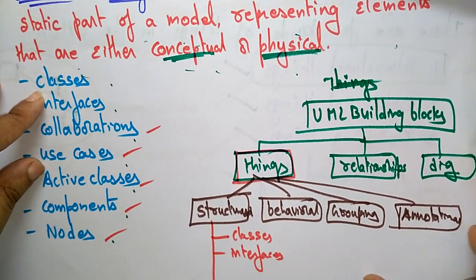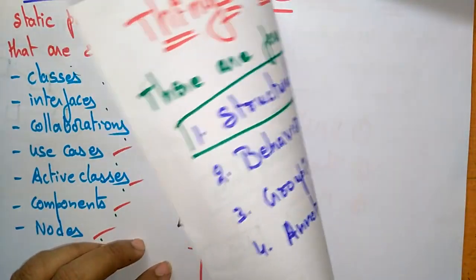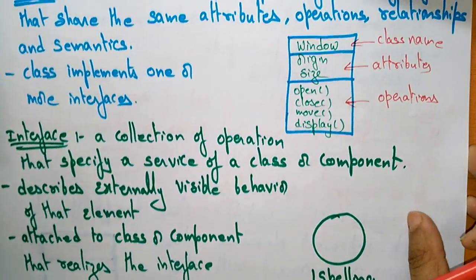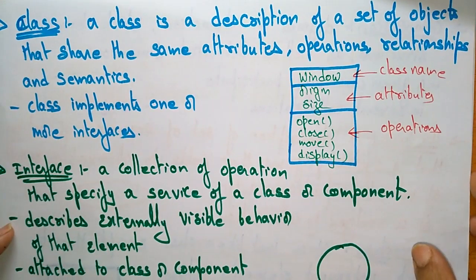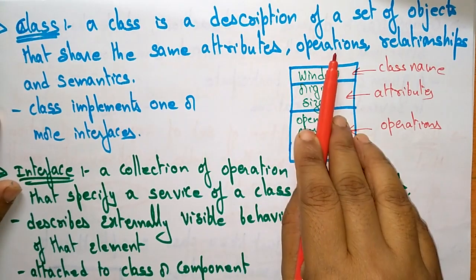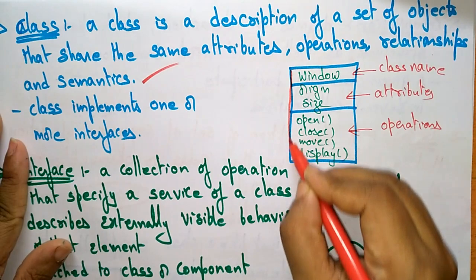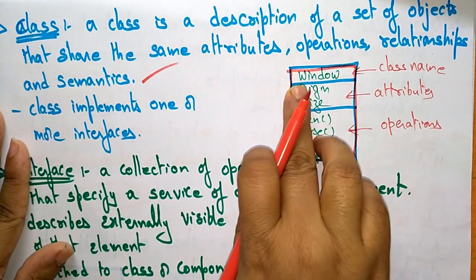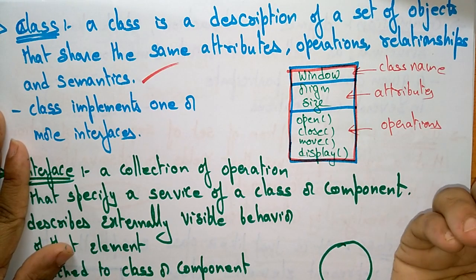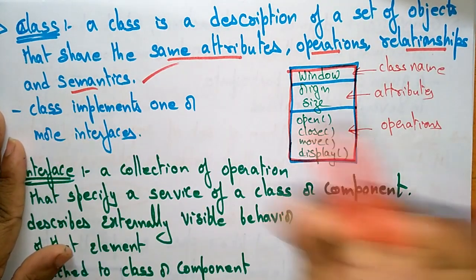Now let us see what is a class and what is an interface. First, what is a class? A class is a description of a set of objects that share the same attributes, operations, relationships, and semantics. A class is a set of objects — those objects share the same attributes, operations, relationships, and semantics.